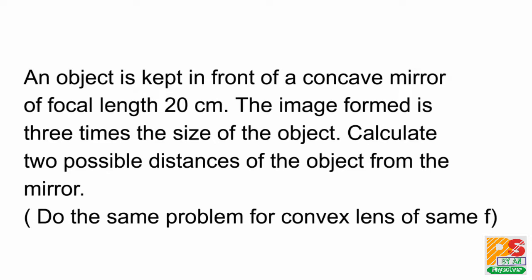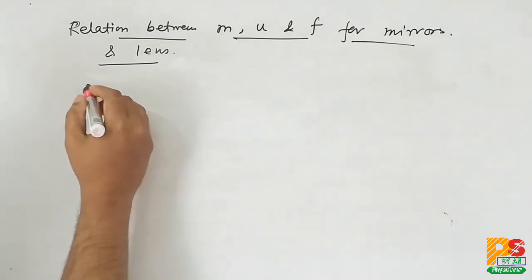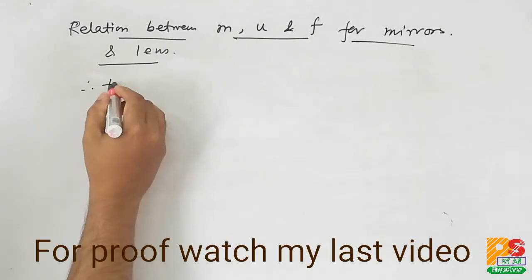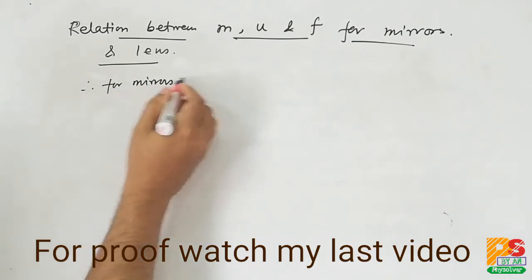Hello students, the question is: an object is kept in front of a concave mirror of focal length 20 centimeters. The image formed is three times the size of the object. Calculate two possible distances of the object from the mirror. Now we'll do the same problem for convex lens also.